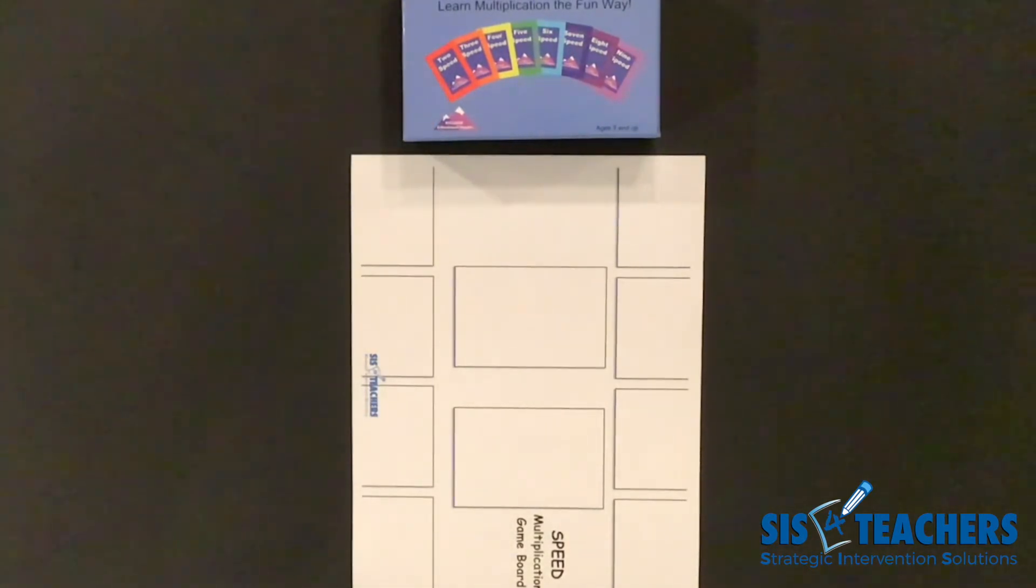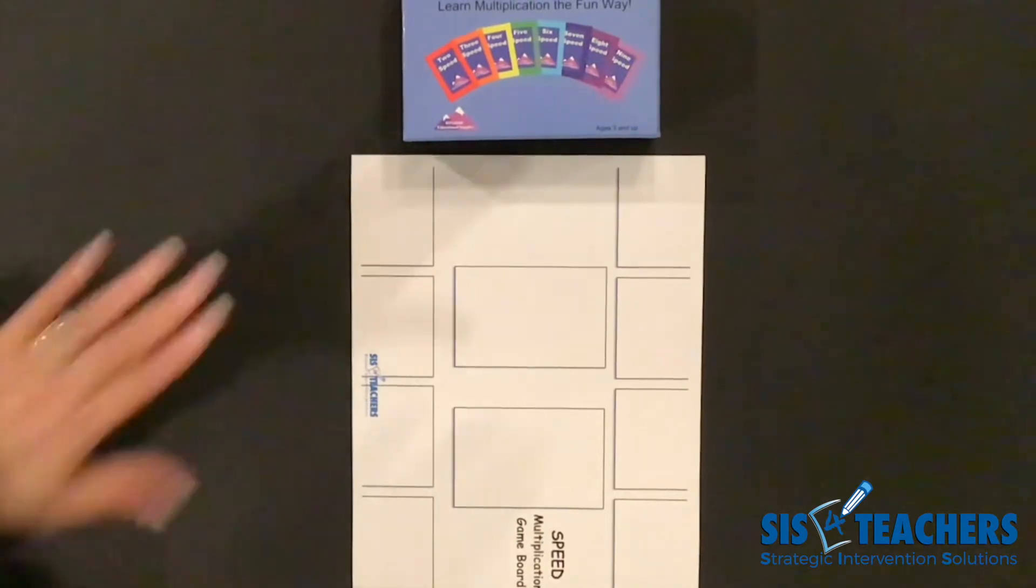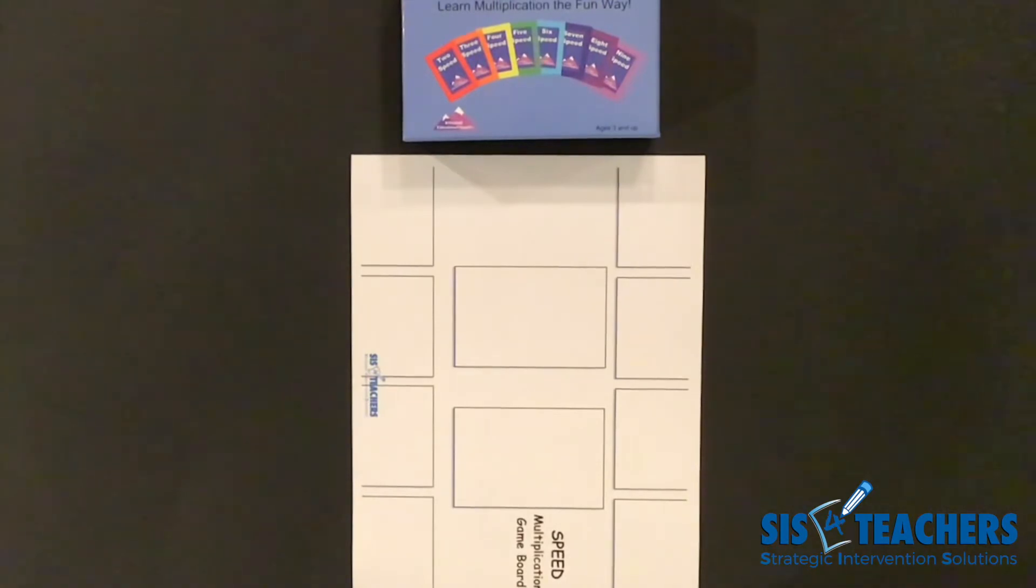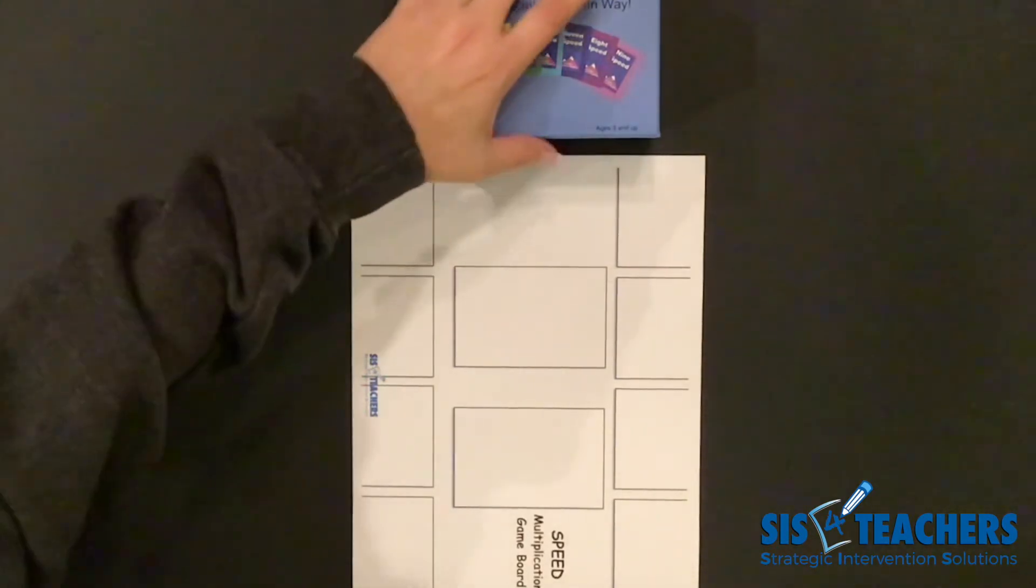Our favorite game from High Hill Education Supplies is the name Speed, with multiplication, learning it the fun way. You can buy this in our store on our website. I'm going to now battle out my partner.